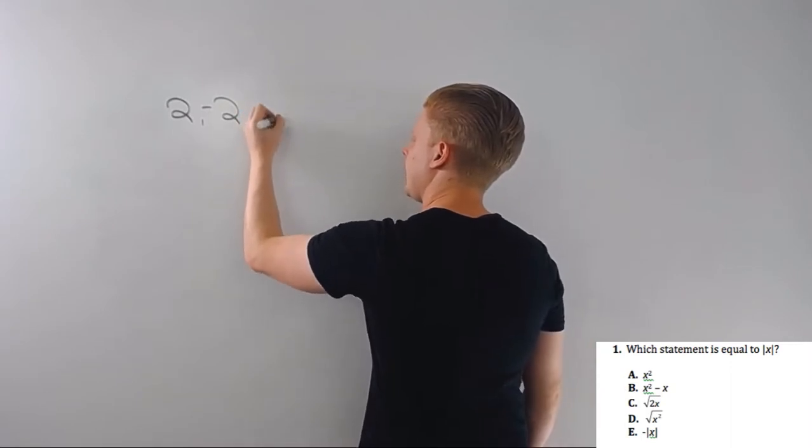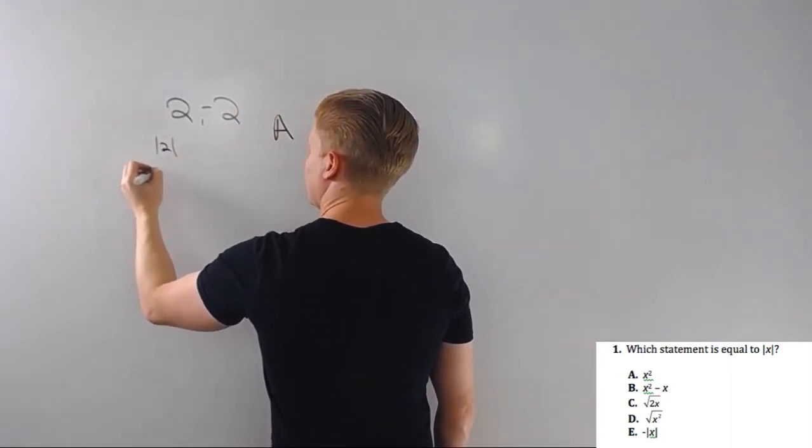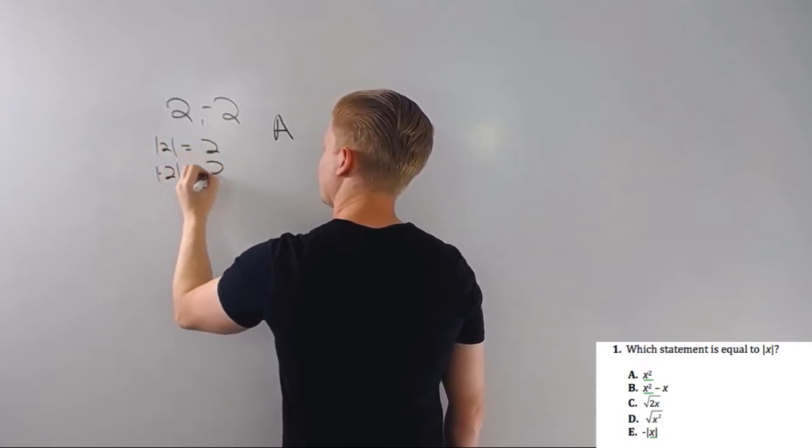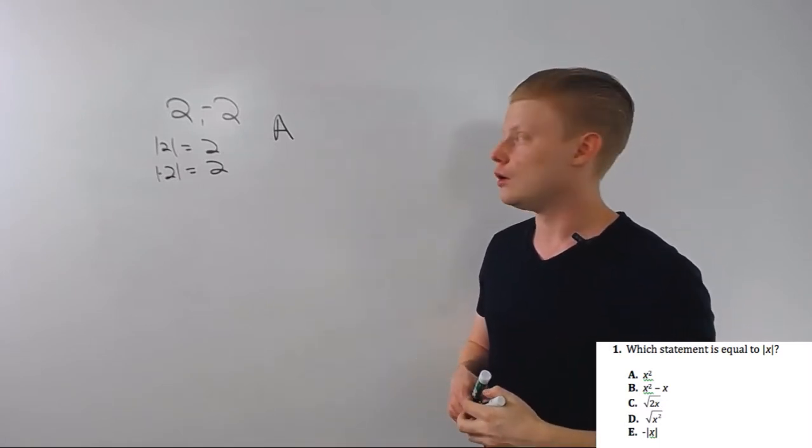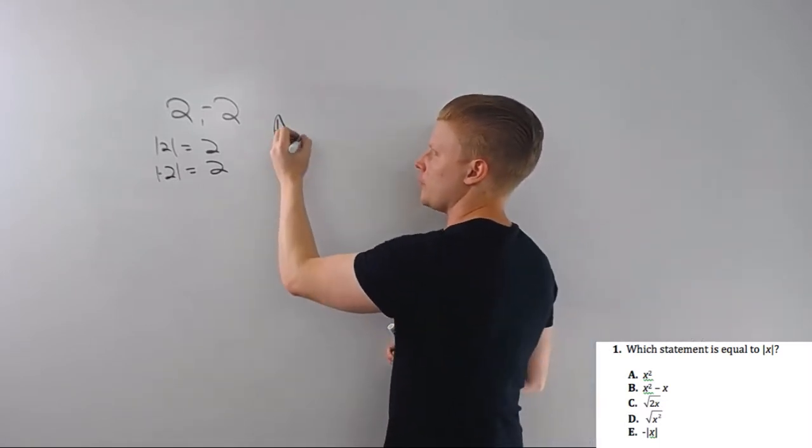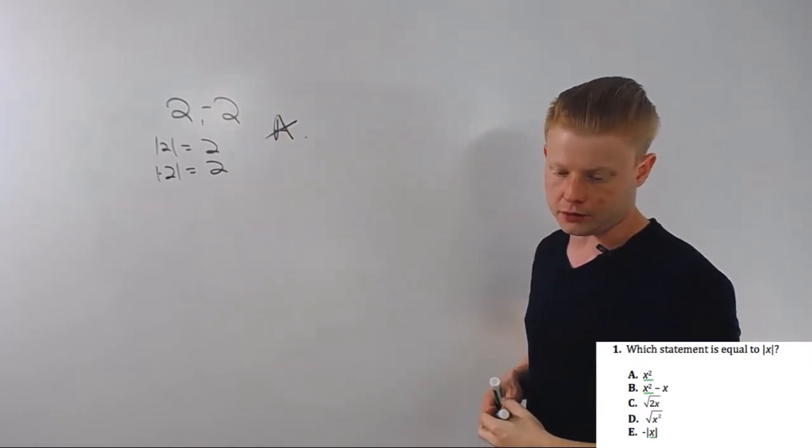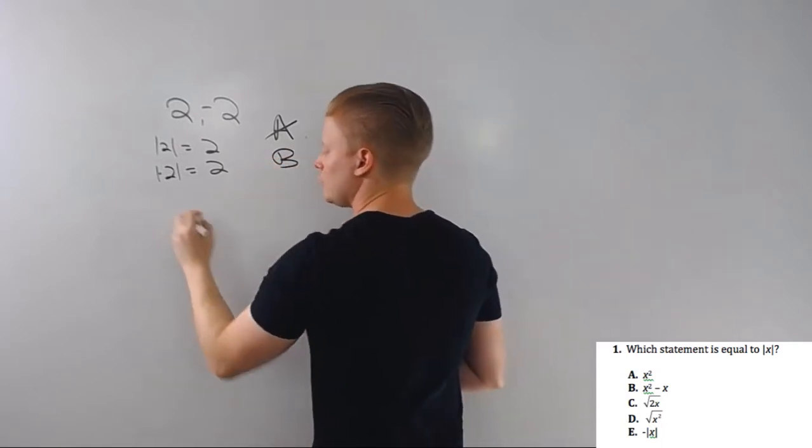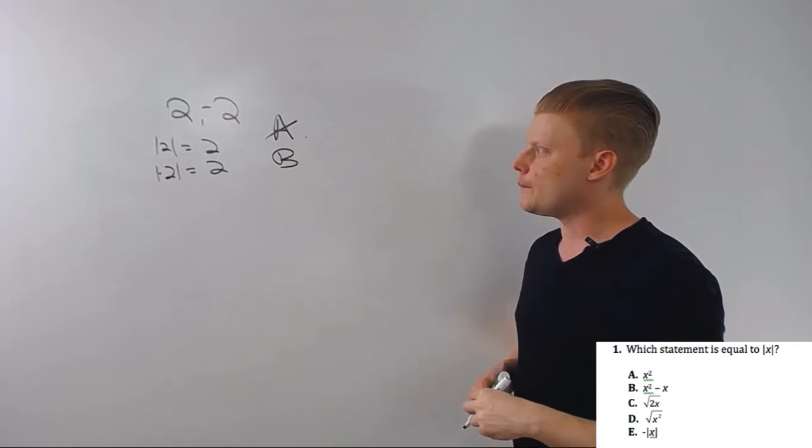I'm going to use two and negative two. Let's look at A. Absolute value of two and negative two is both two, right? So I'm going to look for answer choices that spit out two for both two and negative two. Well A's out because with both two and negative two it's four, right? So that's not going to work.